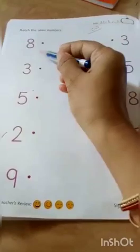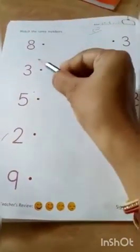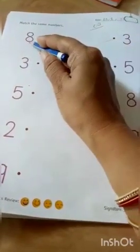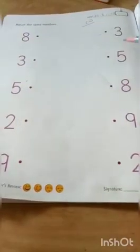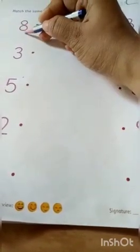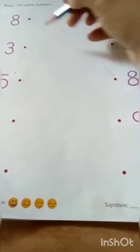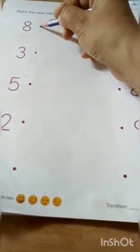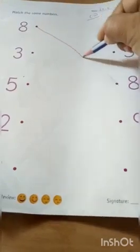So, one row and second row. In this row, numbers are there, and here also. You have to recognize the number first, and find the same number and match with the number. Number 8 — so where is number 8 here, Bita? Here it is. You have to match like this.